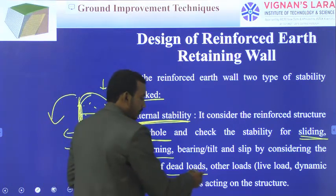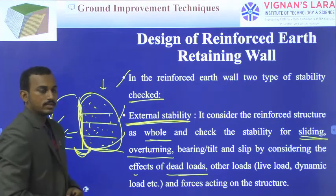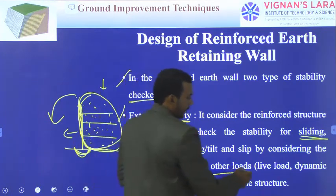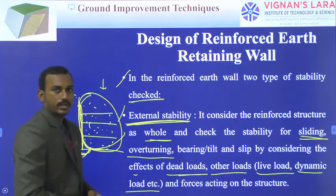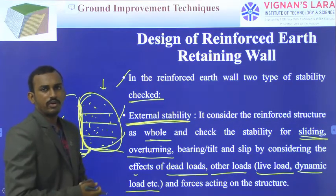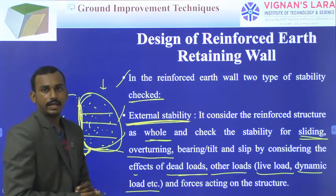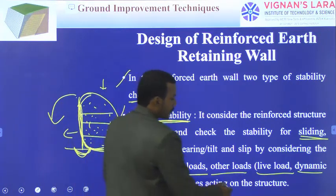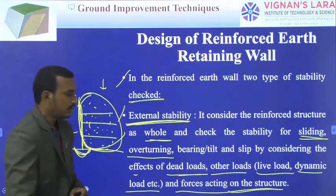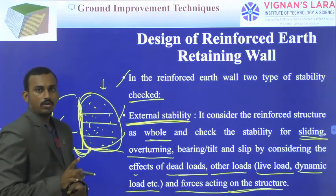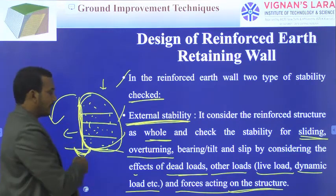By considering loads — self-weight, loads from movement of vehicles (which can be considered as dynamic loads), and forces acting on the structure — we need to check the entire structure as a whole for sliding, overturning, and bearing capacity.